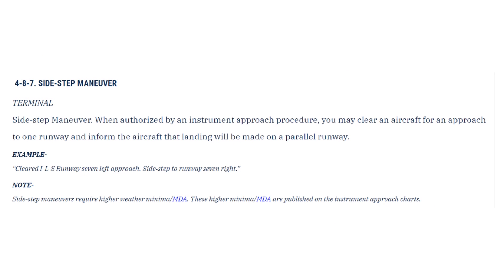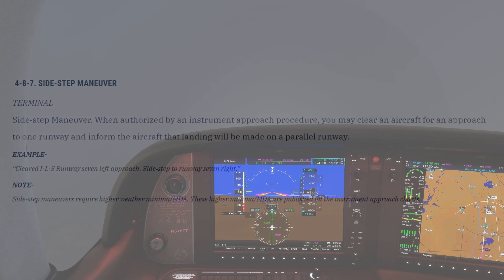7110.65, the controller's handbook, lets ATCs know that they can assign a sidestep when one is authorized by an instrument approach procedure, and the details will be listed in the chart.